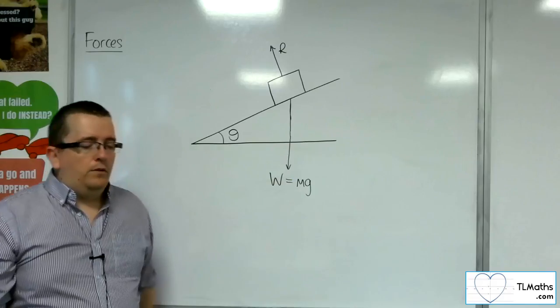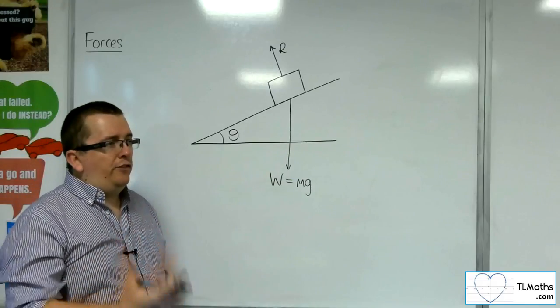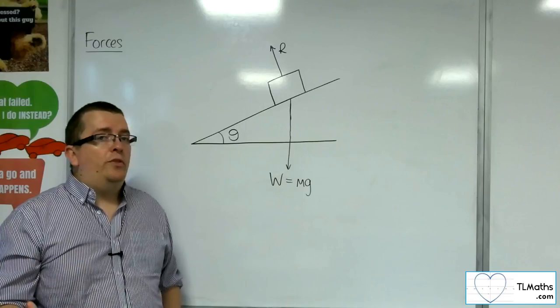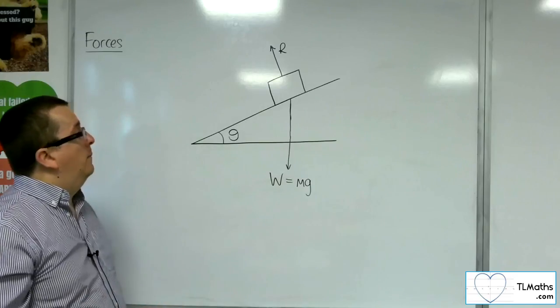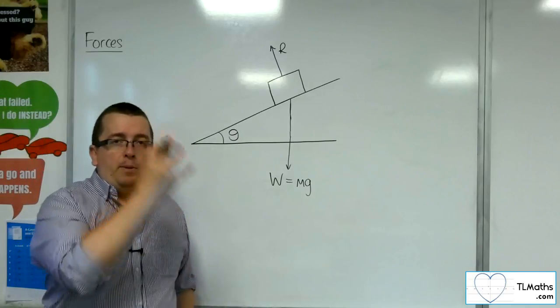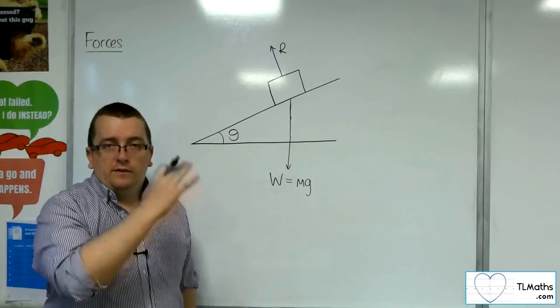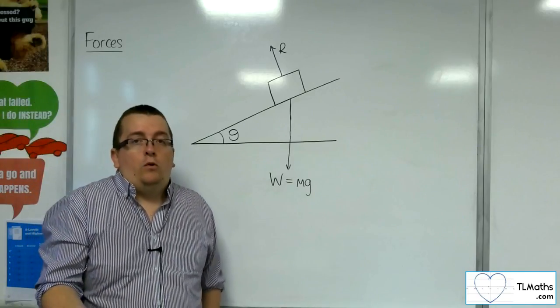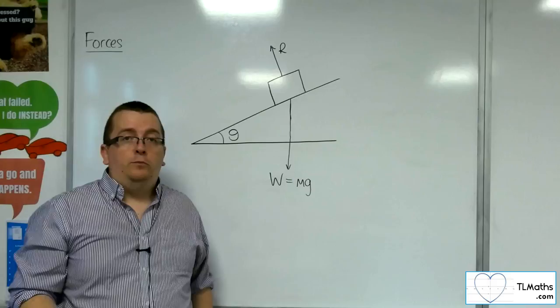If you just think about if this was a smooth inclined plane, and that's what we're going to deal with for the first few problems. Then if you just place a block on a perfectly smooth plane that's inclined at a certain angle theta, then what's going to happen? Well, the block's going to slide down the slope.